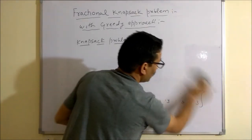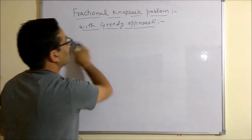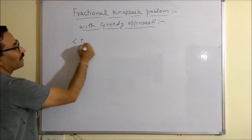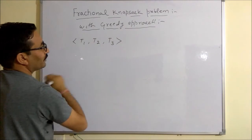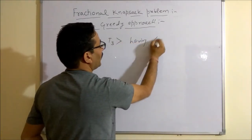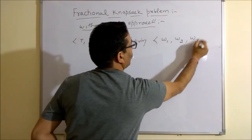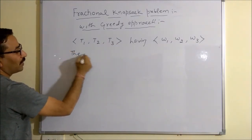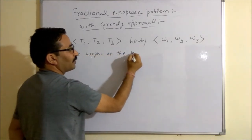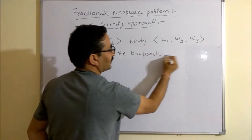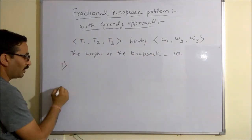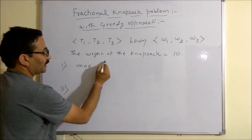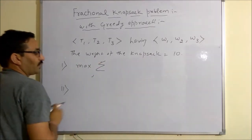Let's take an example to understand the Knapsack problem more clearly. Suppose you are given items T1, T2, and T3 having weights W1, W2, and W3, and the maximum weight capacity of the Knapsack is equal to 10. What you have to find is: you want to maximize the profit.